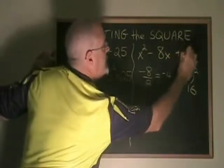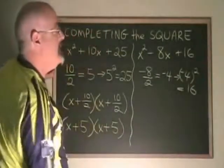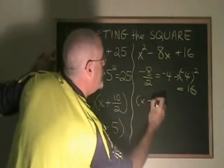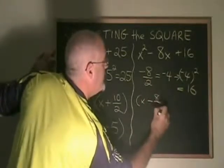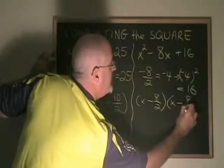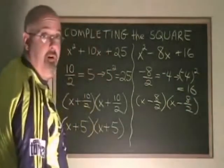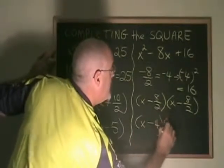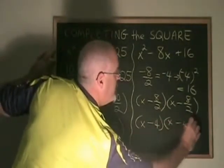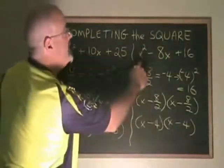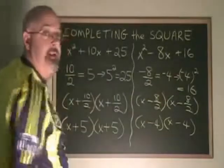This means the factors of this trinomial should be x minus 8 over 2, x minus 8 over 2, which simplifies to x minus 4, x minus 4. If I multiply these two binomials together, I will indeed get x squared minus 8x plus 16.